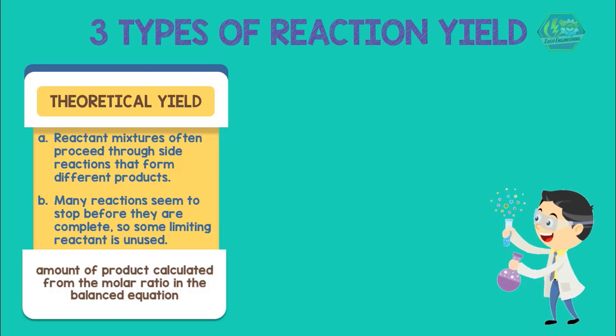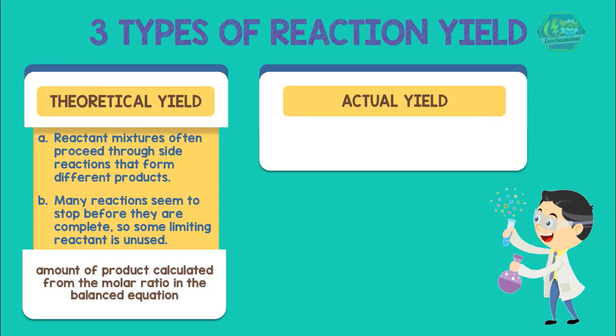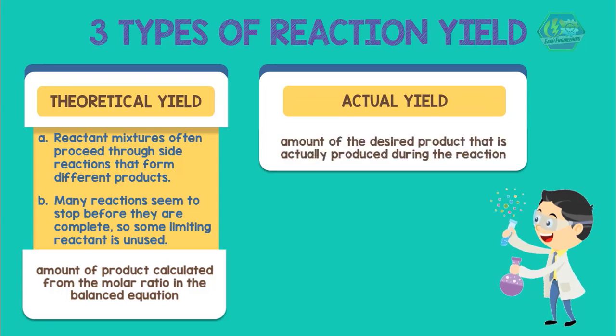The second type of reaction yield is actual yield. This is the amount of the desired product that is actually produced during the reaction.